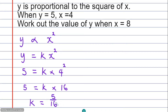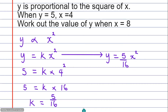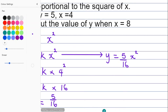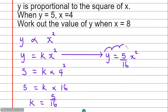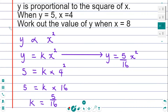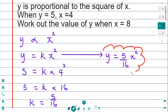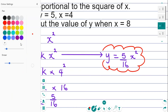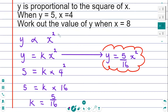I'm going to take this value k = 5/16 and put it into the connecting equation. Drawing a line for emphasis — substituting k, we have y = (5/16)x². This is the connecting equation, and it's very important because we're going to use it to work out the value of y when x is 8.